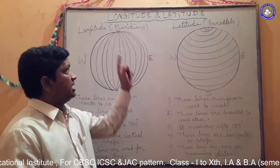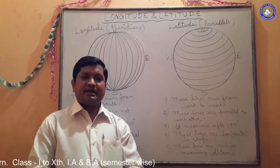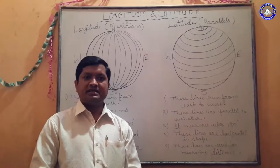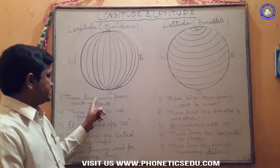On the globe, there are two imaginary lines: longitude and latitude. Longitude are meridians, latitude are parallels. Meridians and parallels are two imaginary lines that have been used for establishing locations or places on earth.